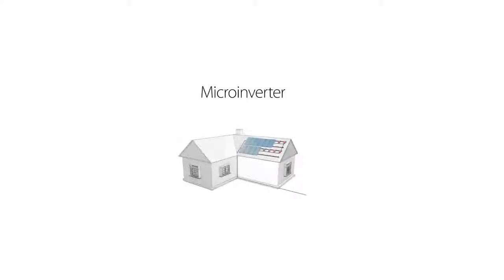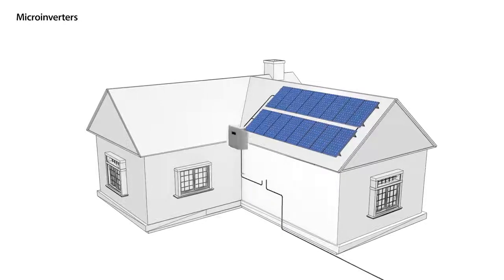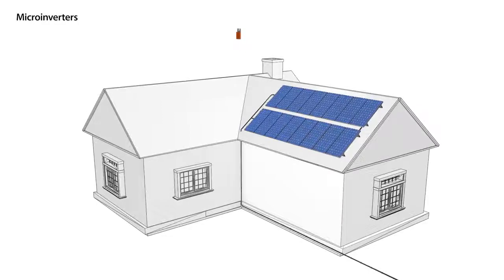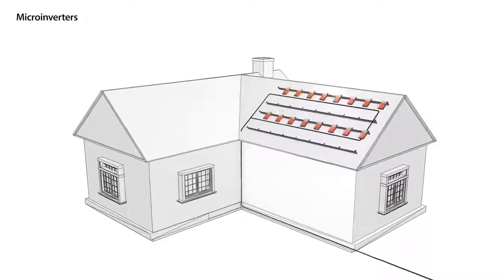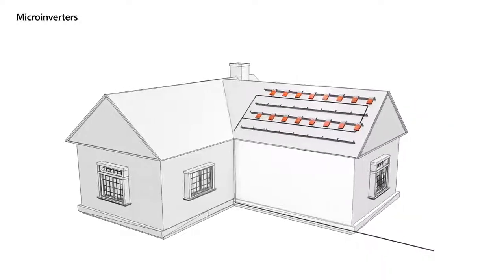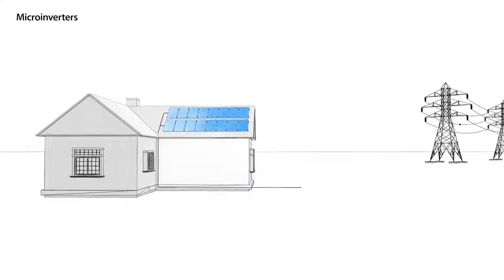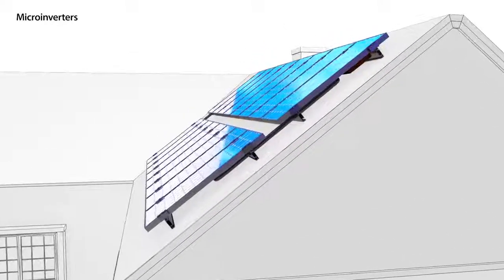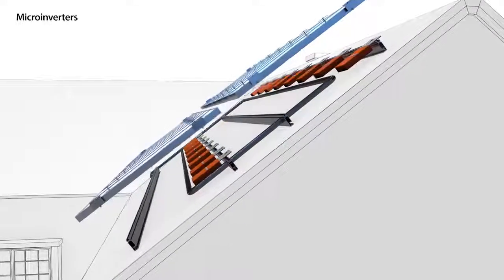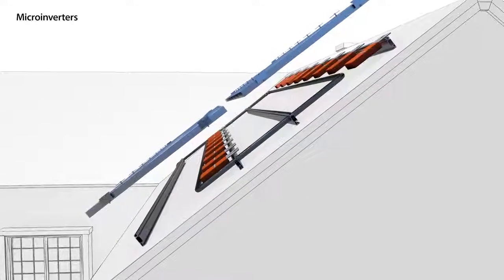In the 90s, another inverter topology was introduced: the micro-inverter. This topology takes the functionality of the traditional string inverter and scales it down to fit a single panel. By controlling each panel individually, micro-inverters are able to solve certain challenges of the traditional system. However, micro-inverters have their own inherent drawbacks. This topology requires each panel to have its own micro-inverter with full inverter functionality, and therefore has significantly higher upfront costs relative to traditional inverter topology.